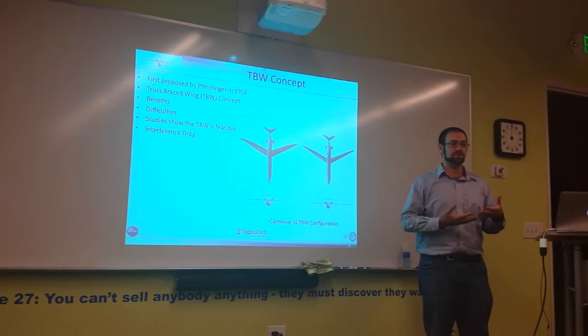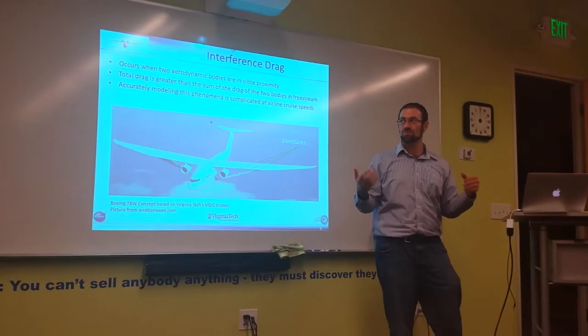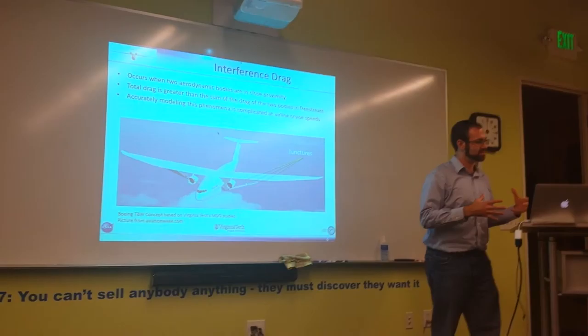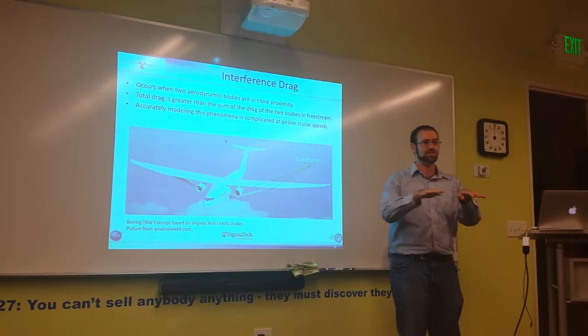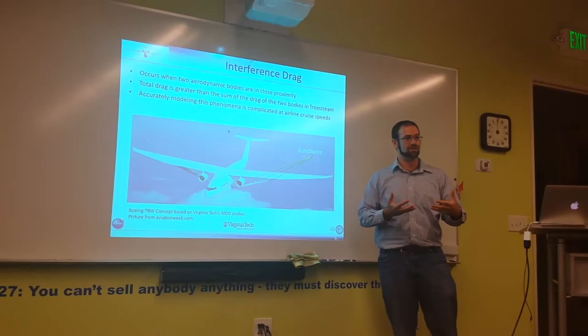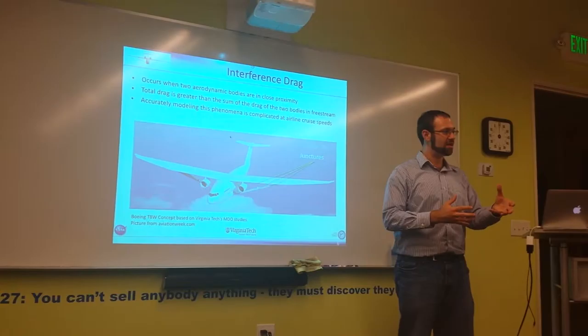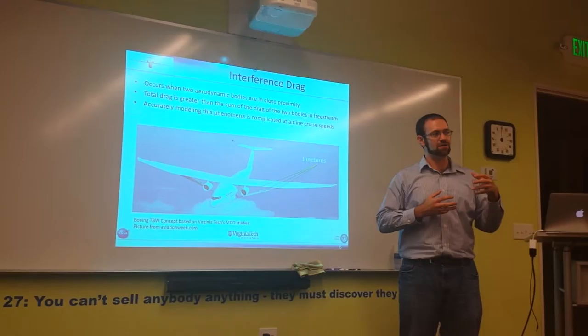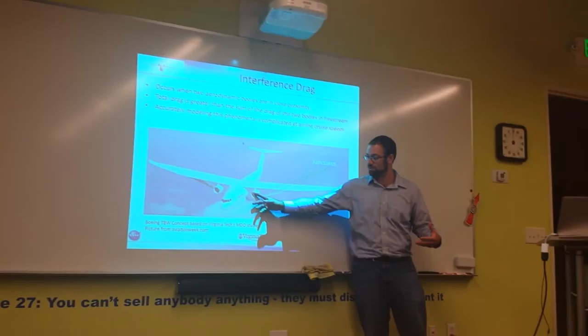Studies at Virginia Tech have shown that the TBW is feasible. But one of the biggest issues is interference drag. And you might be asking yourself, as I did a long time ago, what is interference drag? Well, interference drag is when two aerodynamic bodies are in close proximity, and the total drag is greater than the sum of the drag of the two bodies in the system. So you might imagine two cars next to each other on the highway. You might be able to feel some aerodynamic benefit or no benefit from it. And accurately modeling this phenomenon is very complicated at airline cruise speeds. It's fairly straightforward to say what it's going to be at 60 miles an hour, but at 600 miles an hour there are some flow features that are known but are hard to quantify without actually testing them in real life. And some examples of this are on a concept like this with two engines and a strut. But you see these junctures, what's going on there? We need to find out.